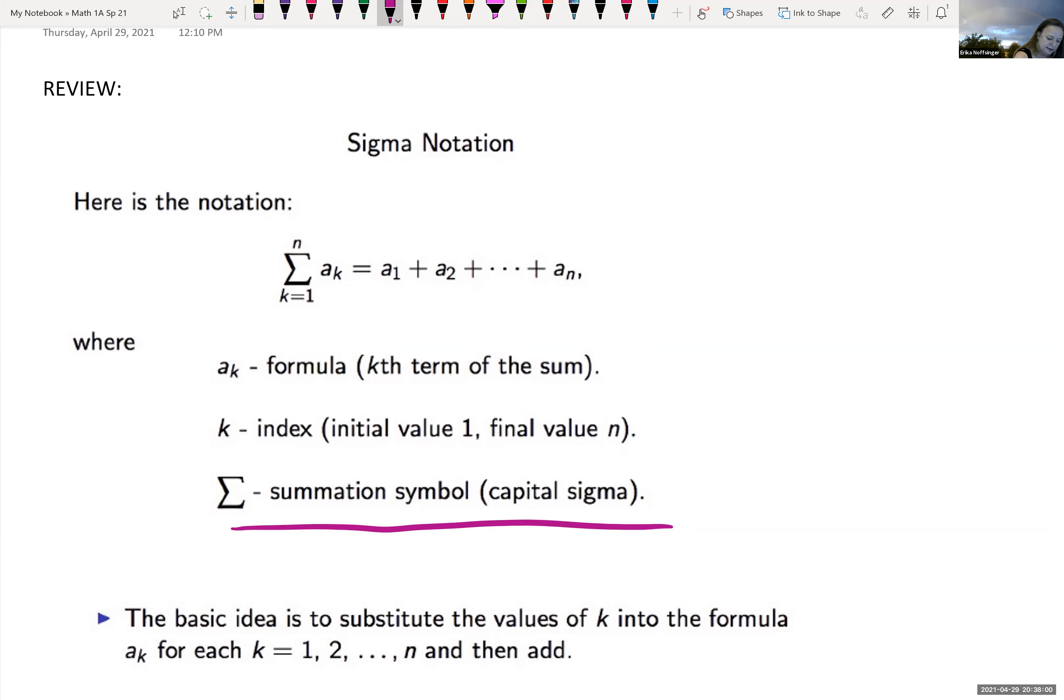And so here is, recall, sigma notation. We use this capital sigma. And that sigma here is telling me that we're going to sum. We're summing basically plugging into our formula a sub k. We would plug in one and that would give us our first term a sub one. We would plug into this formula a sub k and that would give us our second term. And we would add until we got up to a sub n, the nth term.